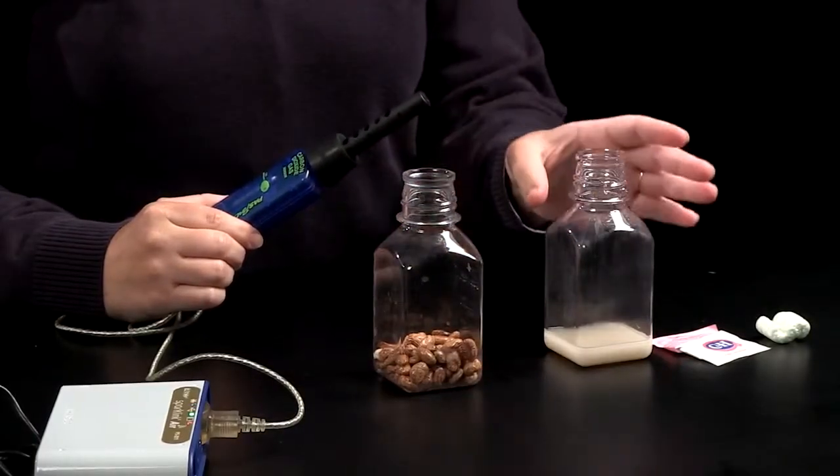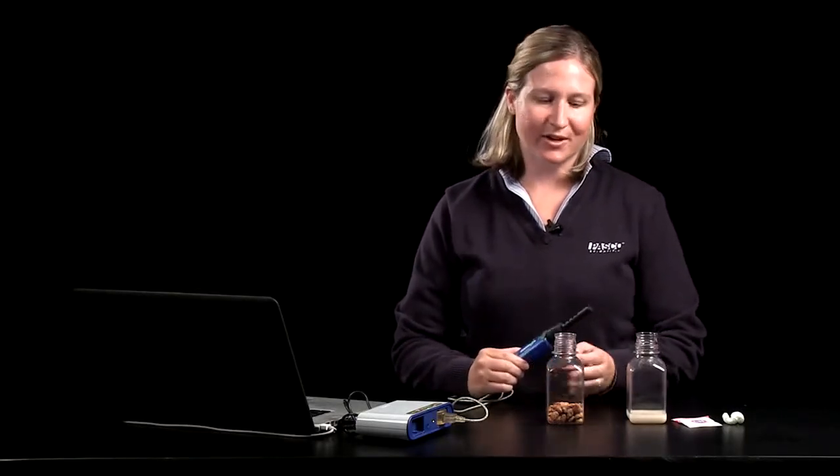The most common use of the carbon dioxide gas sensor is for experiments about cellular respiration. You can use a number of different organisms for these experiments. You can use germinating seeds, a solution of yeast, or you can go to the pet store and get crickets or mealworms. Students always find it exciting if the living thing that they're studying actually moves around. But for today's video, I'm going to use germinating seeds.